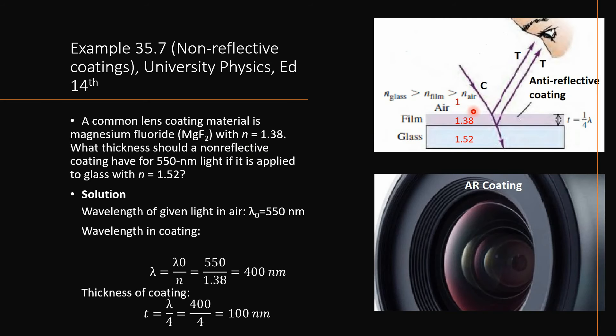The light that is used in this system is 550 nanometers and this is the wavelength of the light in air. The refractive index of air is 1, of magnesium fluoride is 1.38, and of the glass or lens medium is 1.52.